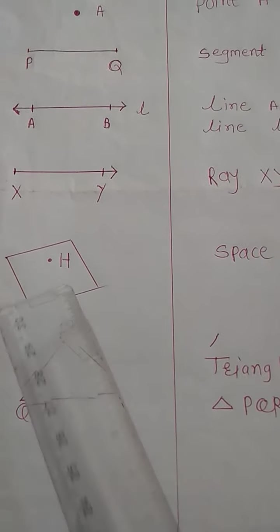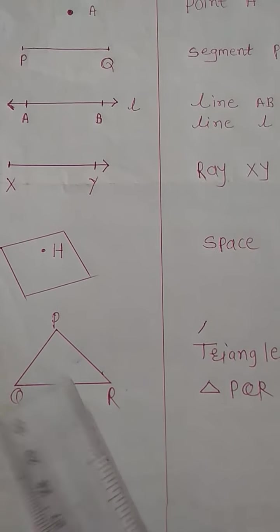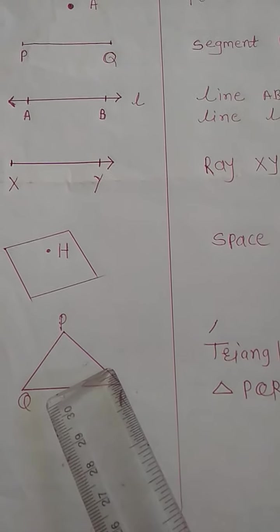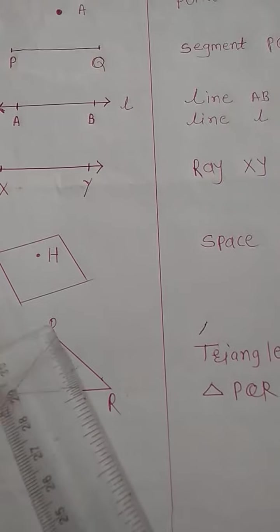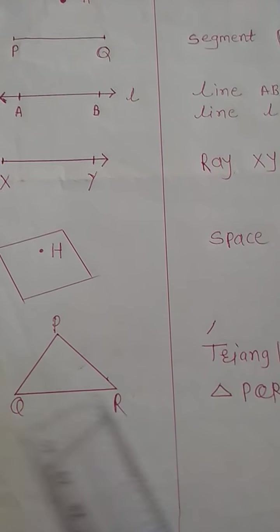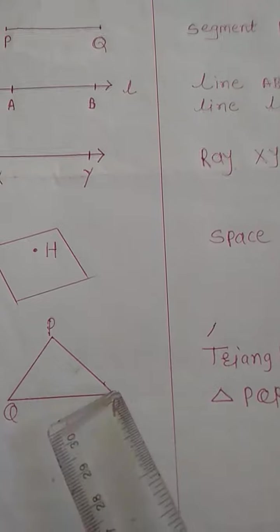Here, read as plane H. Triangle. Triangle is a closed figure. Here, read as triangle PQR. Triangle has three non-collinear points.